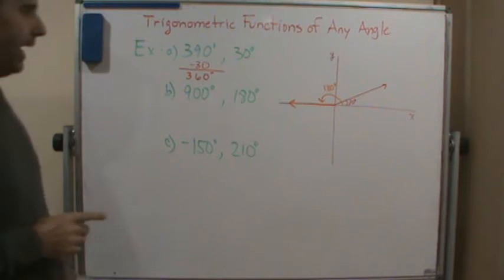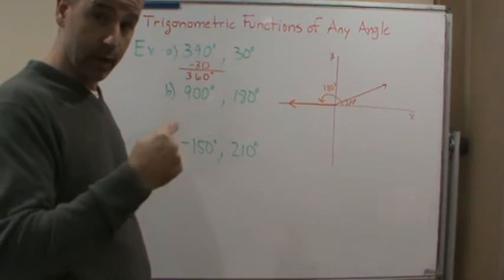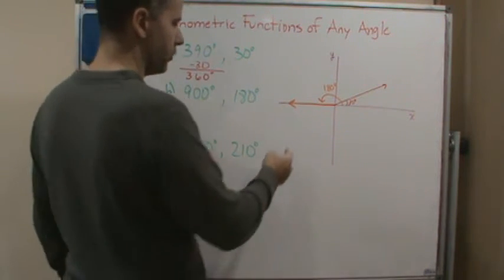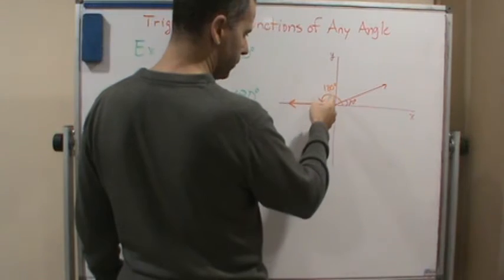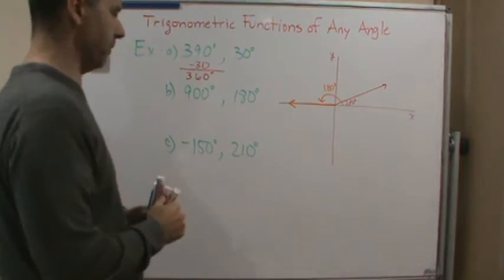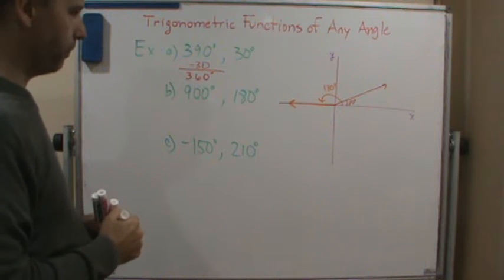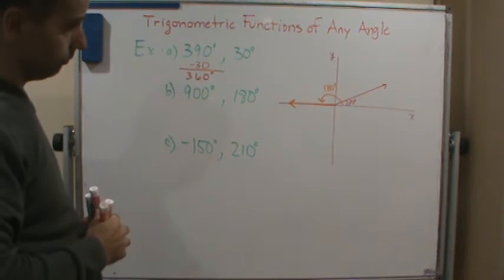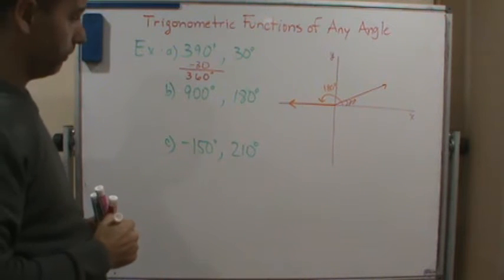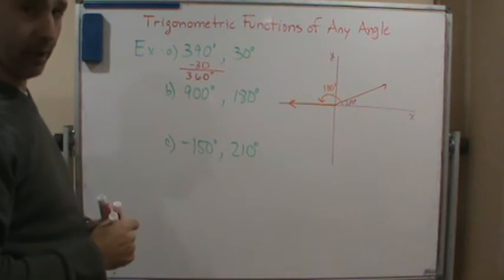Now, if I add, again, if I add 360 degrees, I'll come right around full circle. So 360, so 180 plus 360 is what? 540, right? Not quite there.